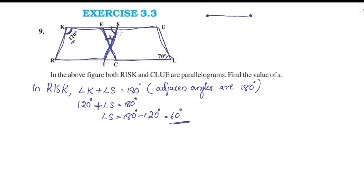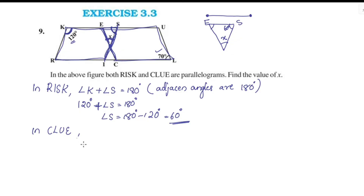Now we look at the triangle formed. We need to find x. In parallelogram CLUE, we use the property that opposite angles are equal. Angle L equals Angle E. The angle given at C is 60 degrees, and one angle is 70 degrees.